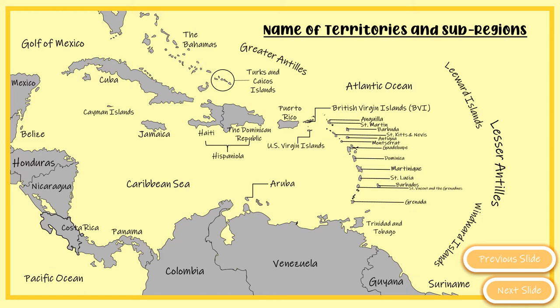The Lesser Antilles are the smaller groups of islands located east of the Caribbean Sea. They are divided into the Leeward Islands and the Windward Islands. The Leeward Islands are further north on the map and are the smaller set of islands, while the Windward Islands are the larger set within the Lesser Antilles.